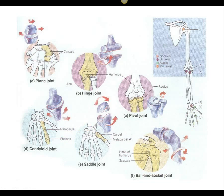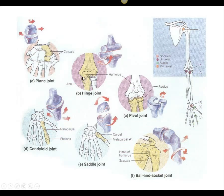In our skull, we have things called sutures — that's actually a joint where two bones meet. That would be an immovable joint. But if we look at other types of joints like the joints in our wrists and ankles, those are called plane joints because they kind of slide on each other along specific planes.